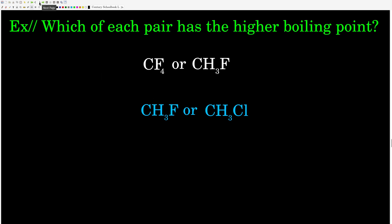Welcome back. Carbon tetrafluoride is non-polar — it's tetrahedral and everything cancels. Fluoromethane is polar, so it has dipole-dipole intermolecular forces while carbon tetrafluoride only has dispersion forces. So fluoromethane will have a higher boiling point. Comparing fluoromethane and chloromethane, both are polar, but the chlorine atom is larger than fluorine, so the bond between chlorine and carbon is longer and the dipole moment is actually larger. Chloromethane will have a higher boiling point.